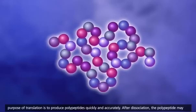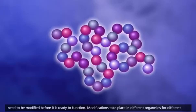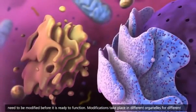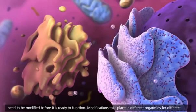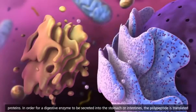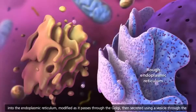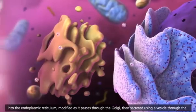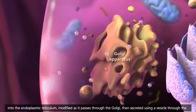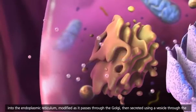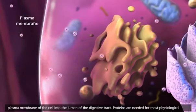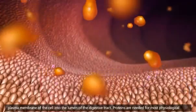After dissociation, the polypeptide may need to be modified before it is ready to function. Modifications take place in different organelles for different proteins. In order for a digestive enzyme to be secreted into the stomach or intestines, the polypeptide is translated into the endoplasmic reticulum, modified as it passes through the Golgi, then secreted using a vesicle through the plasma membrane of the cell into the lumen of the digestive tract.